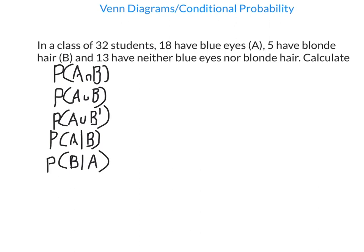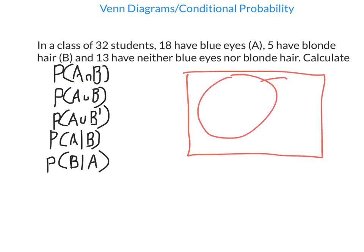This is a Venn diagram question because it involves two sets: Set A — people with blue eyes, and Set B — people with blonde hair. When we have a probability question involving two sets, Venn diagrams help us organise information. A Venn diagram always has a rectangle with two overlapping circles inside, each representing one set. Let's draw one and put all the given information in — that will make each calculation much easier.